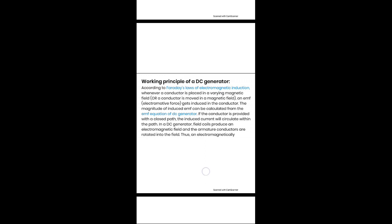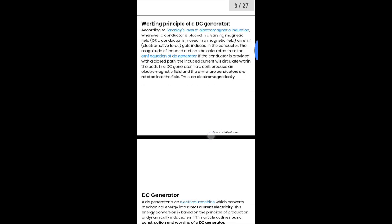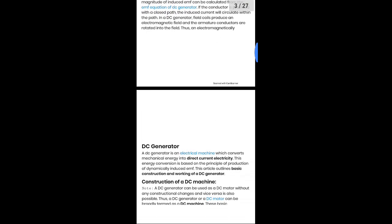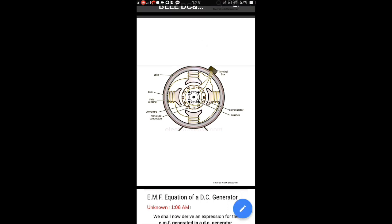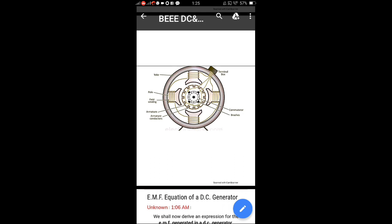Now, what is the construction of a DC generator? The main parts are: yoke, poles and field winding on the stator. Every DC machine consists of two parts — stator and rotor. For a DC generator or DC motor, constructionally both are the same. We give supply to the motor and obtain supply from the generator. Poles and field winding are on the stator; armature conductors and commutator are on the rotor.